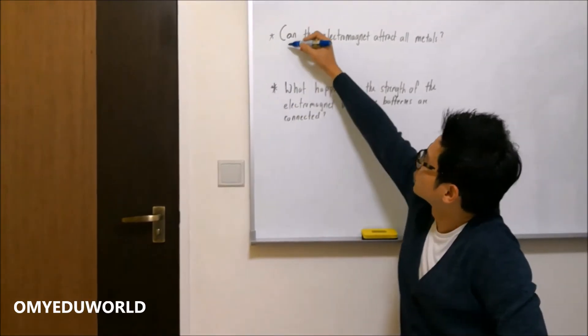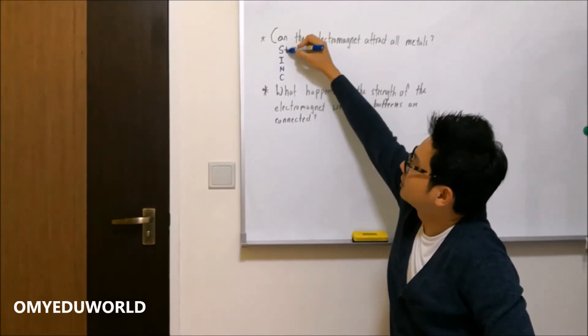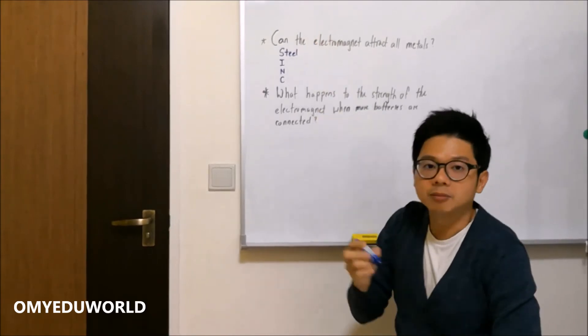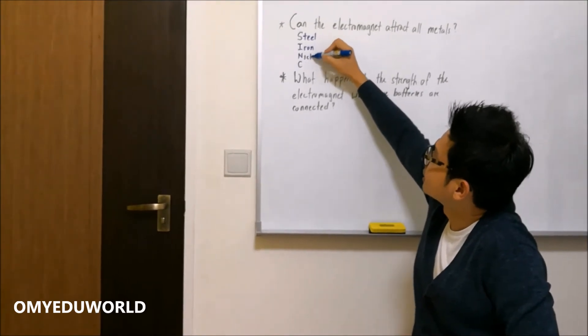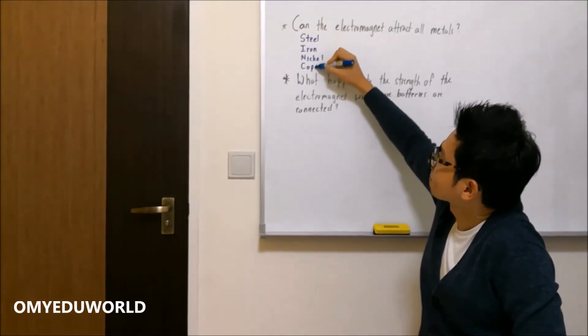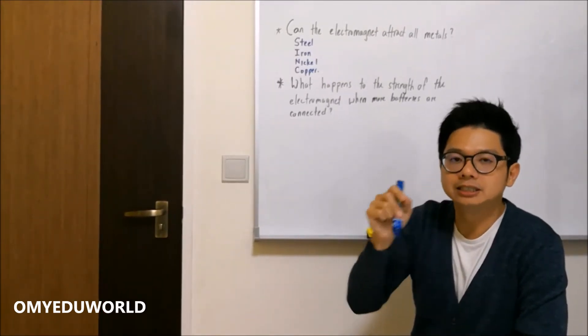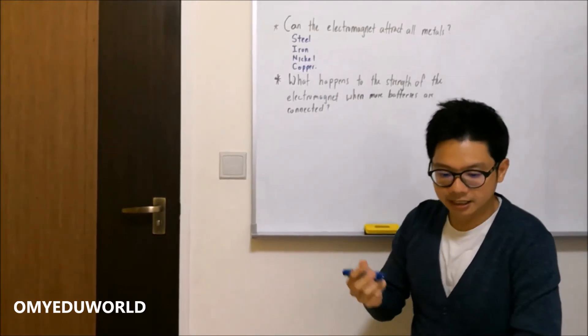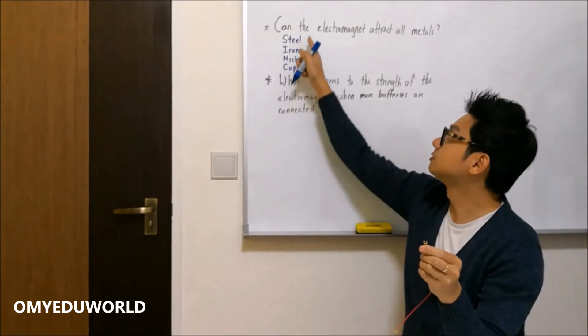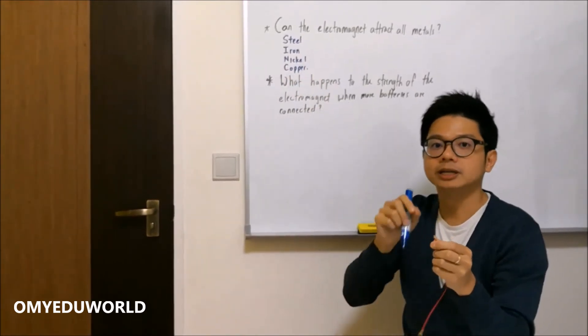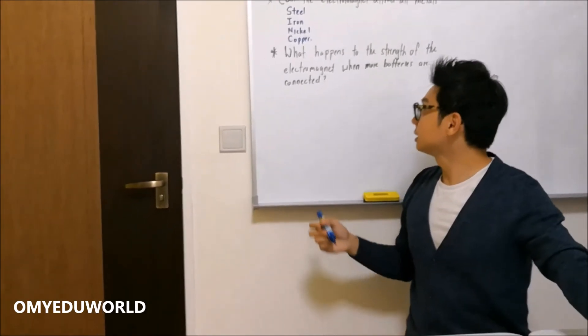Remember this mnemonic: Superman Is Not Cute. Why? Because Superman is very muscular, so Superman cannot be cute. S stands for Steel, I stands for Iron, N for Nickel, and C for Cobalt. So when you have a magnet, it can only attract these four types of matter. And of course, this pen down here is not made out of these four metals. That's why the electromagnet does not attract it.